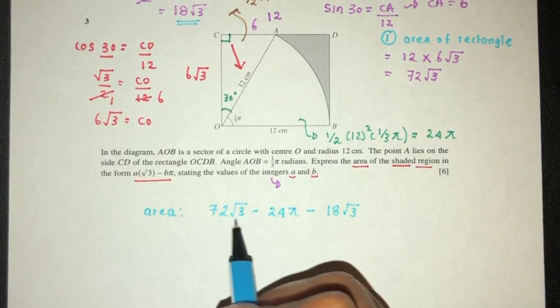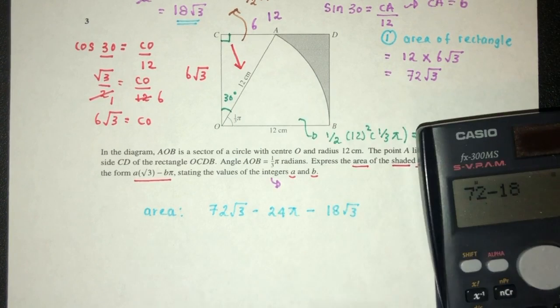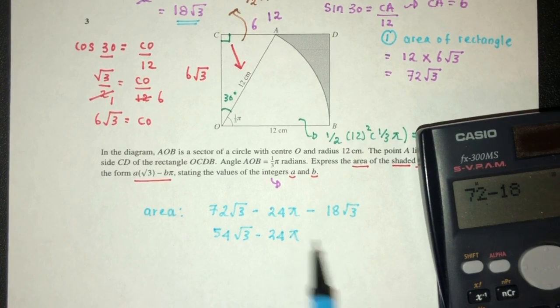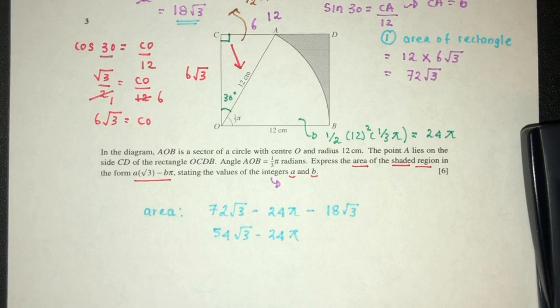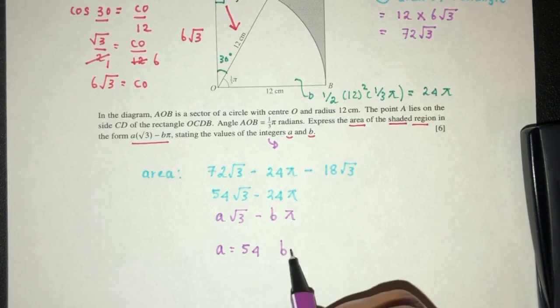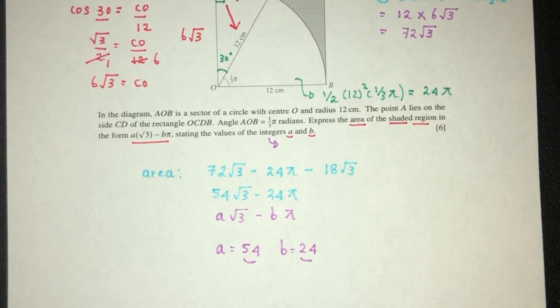So here we have the same thing. We can minus them. 72 minus 18. That should be 54. So here we have 54 root 3 minus 24 pi. Now we have to try to make this look like this. So what can we do? Here by comparing, here we have A root 3 minus B pi. So value of A should be 54 and B should be 24. These are integer values shown as required for this question in relation to circular measure.